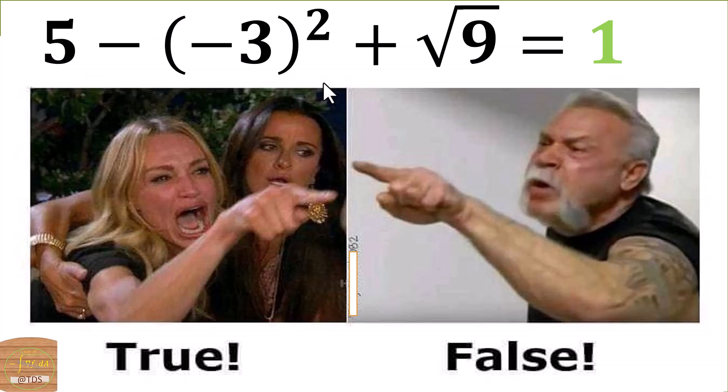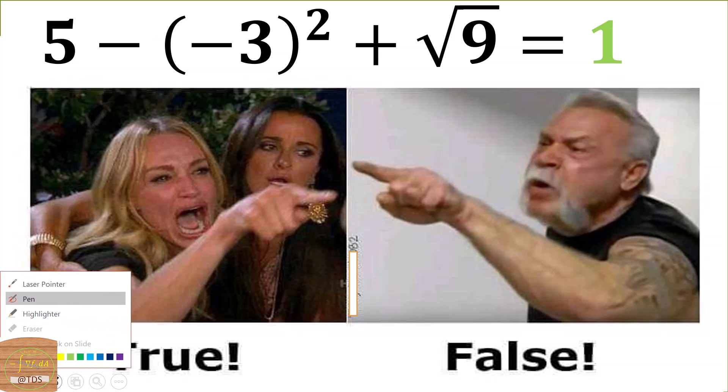Let's look at this expression that has gone viral with a lot of comments. We have 5 minus what is inside the bracket here, negative 3 squared, plus square root of 9.